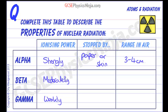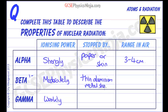Beta particles are moderately ionizing and won't have as many collisions as alpha particles because they have only a 1- charge and are much smaller. They pass straight through paper or skin but are stopped by a thin aluminum metal sheet. In air, beta particles travel a lot further — about 1 or 2 meters — as they're not having as many collisions.